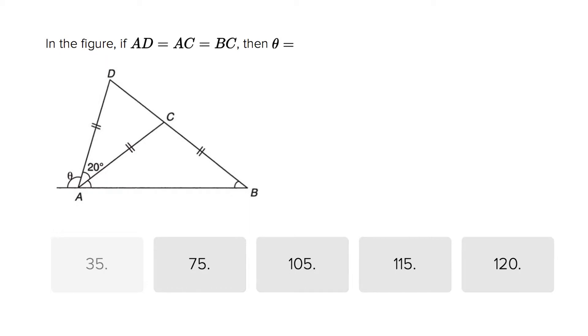This is the Real Time Rows. We get ourselves an angles riddle here. They tell us AD equals AC equals BC. Those are already indicated here on our figure. Those sides have the same length, and they want us to find theta.